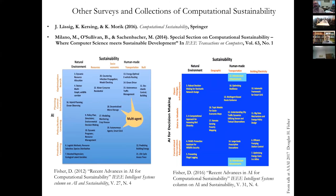There are other surveys and collections in computational sustainability. I've done surveys of computational sustainability papers at AAAI 2011 and 2016, looking at both sustainability and computing methods. I use a matrix representation — not entirely happy with it, but it gets points across about the variety of computational methods and sustainability application areas.